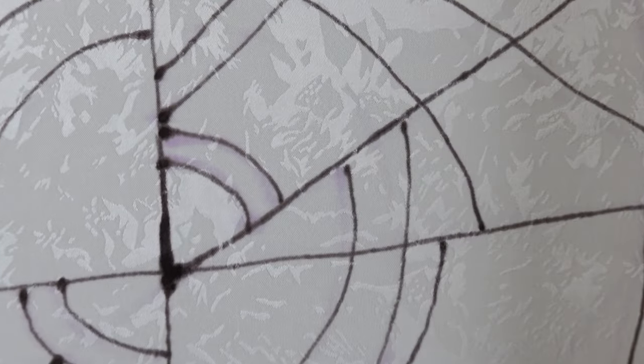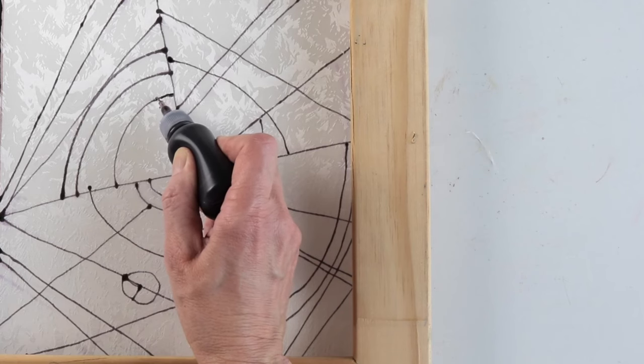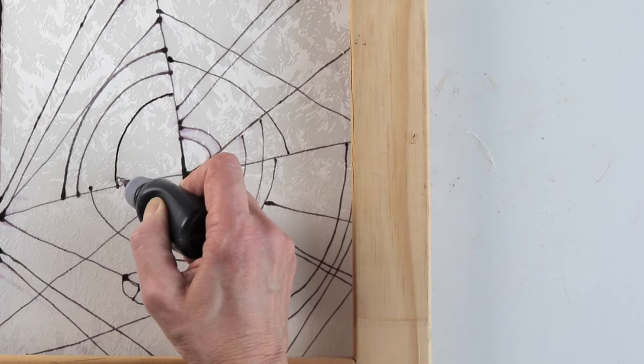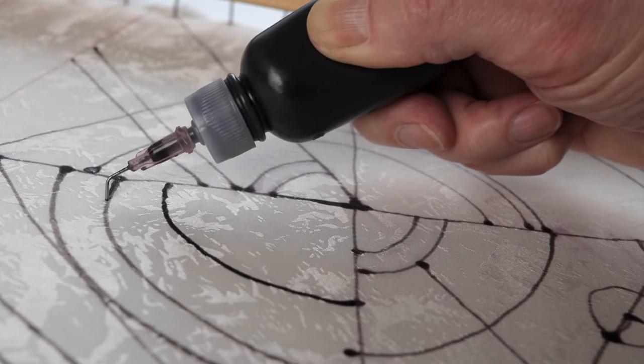And one more thing, Resist doesn't always penetrate through dense silk to the full depth, so you should always check from the back side. You can see that the line turns out to be discontinuous.